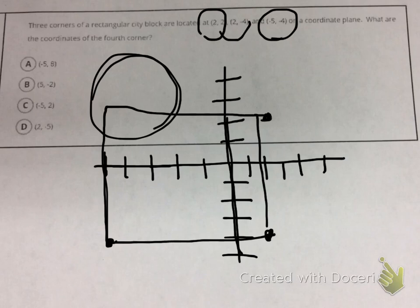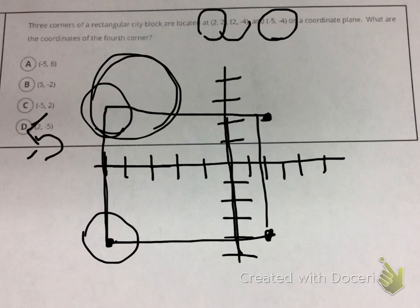Because I want my x-coordinate to match for this corner, to match the x-coordinate for this corner, I know that this x-coordinate is going to be negative 5, which is the same x-coordinate for this corner.